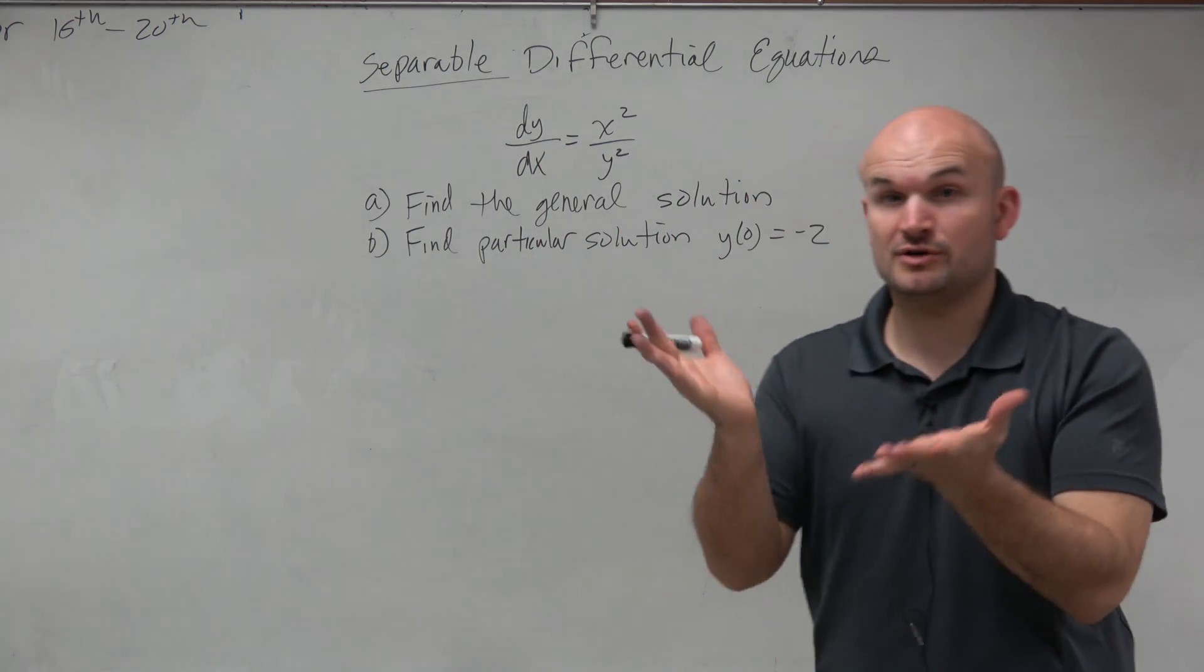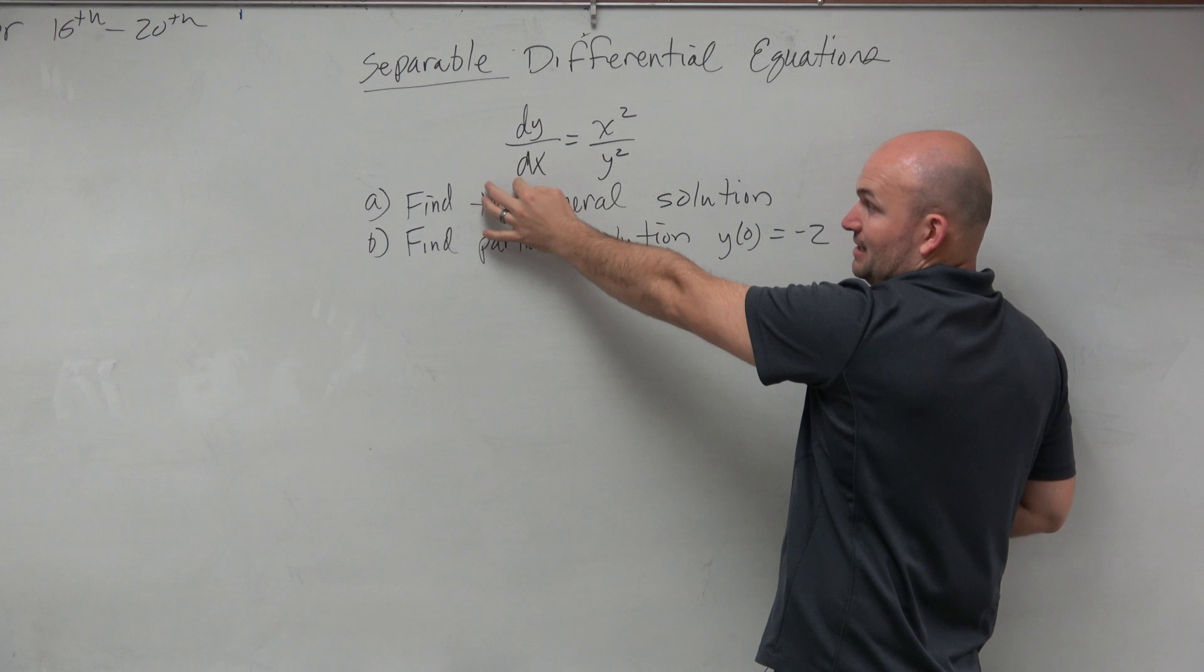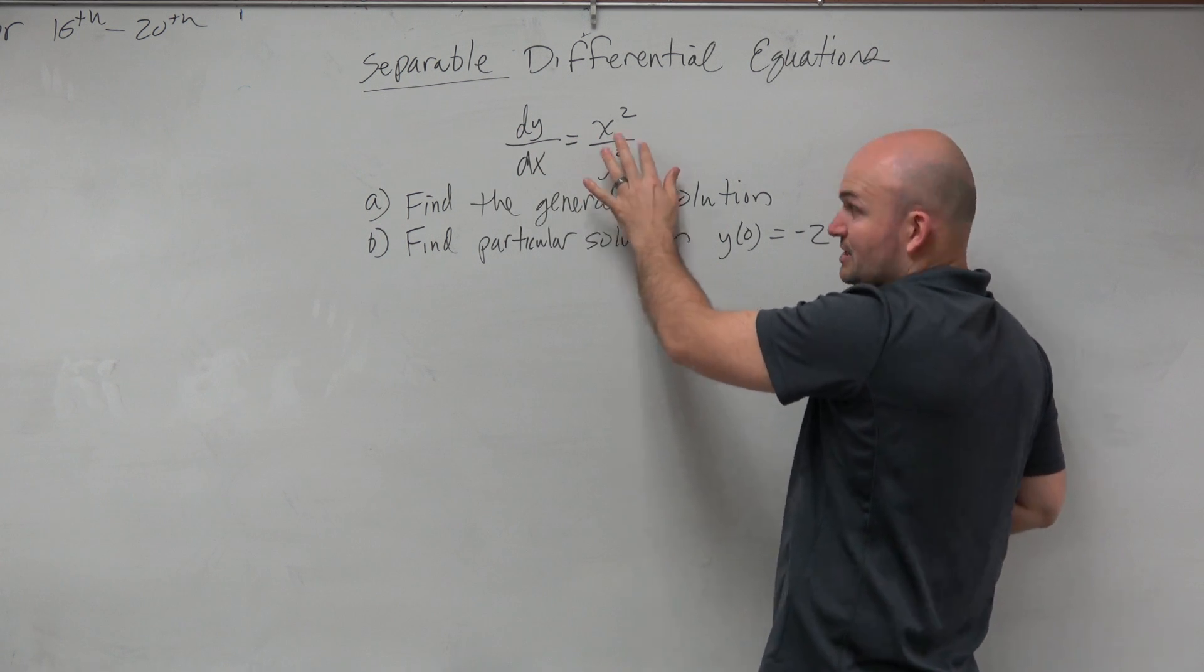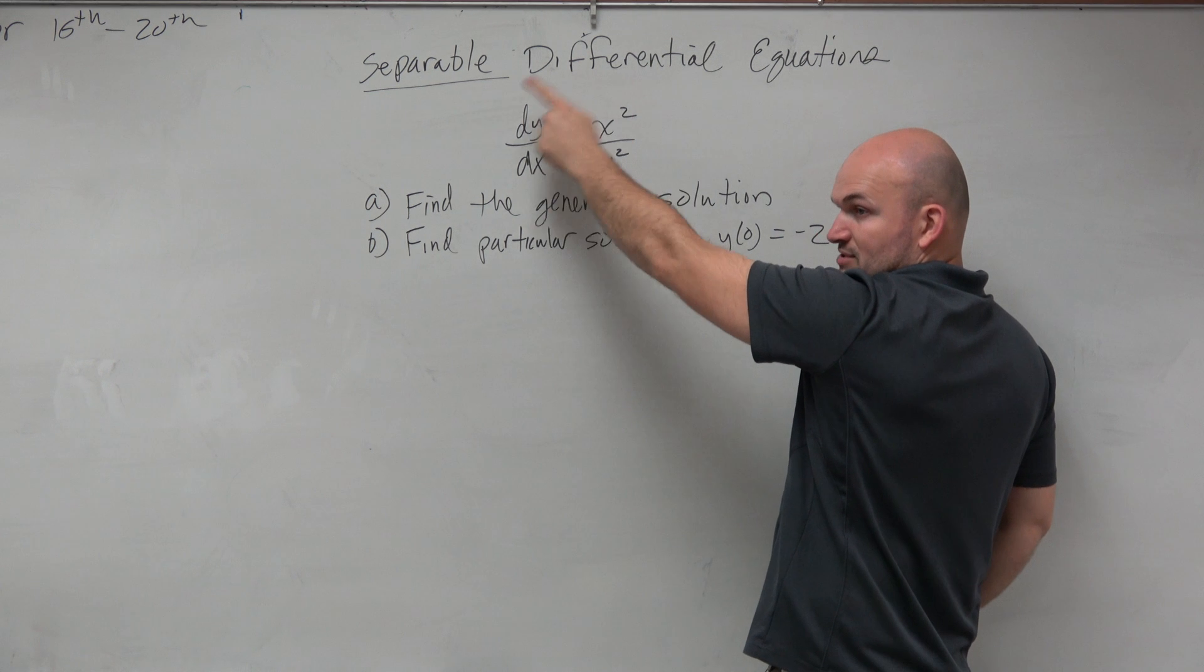So the first thing we want to do is separate the variables. And you guys can see, to get rid of this dx on this side, I can just multiply both sides by dx. And then here, to get rid of the y squared, or at least get the y over there, I can multiply both sides by y squared.